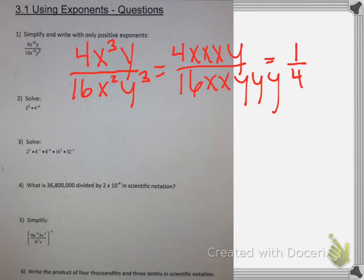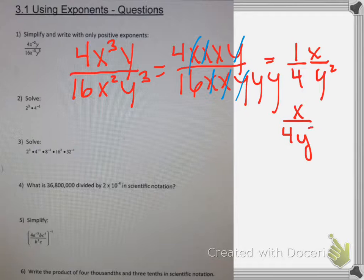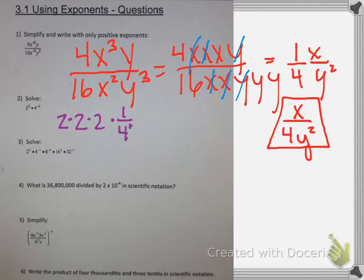So I can rewrite 4 over 16 as 1 over 4, and then I can start canceling out what I have duplicates in the numerator and denominator. What I'm left with is x in the numerator and y squared in the denominator, so this simplifies to x over 4y squared. Number 2 has something similar.